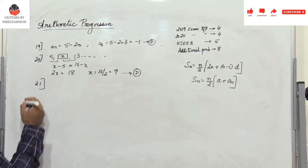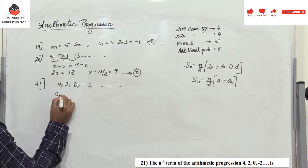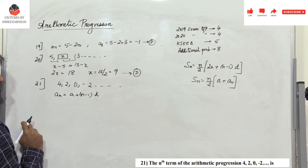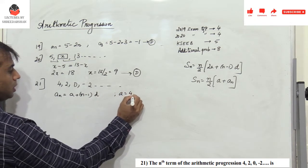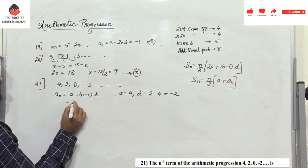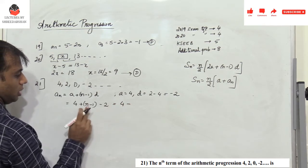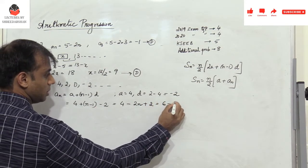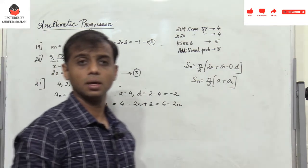Problem 21: find the nth term of the arithmetic progression 4, 2, 0, ... Using aₙ = a + (n-1)d with a = 4 and d = 2 - 4 = -2: aₙ = 4 + (n-1)×(-2) = 4 - 2n + 2 = 6 - 2n. So 6 - 2n is the answer.